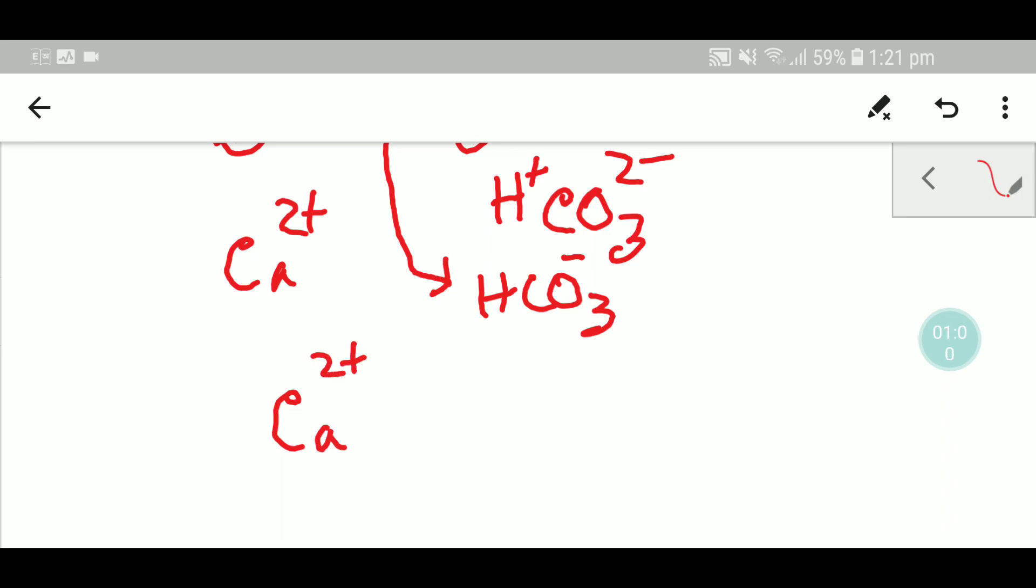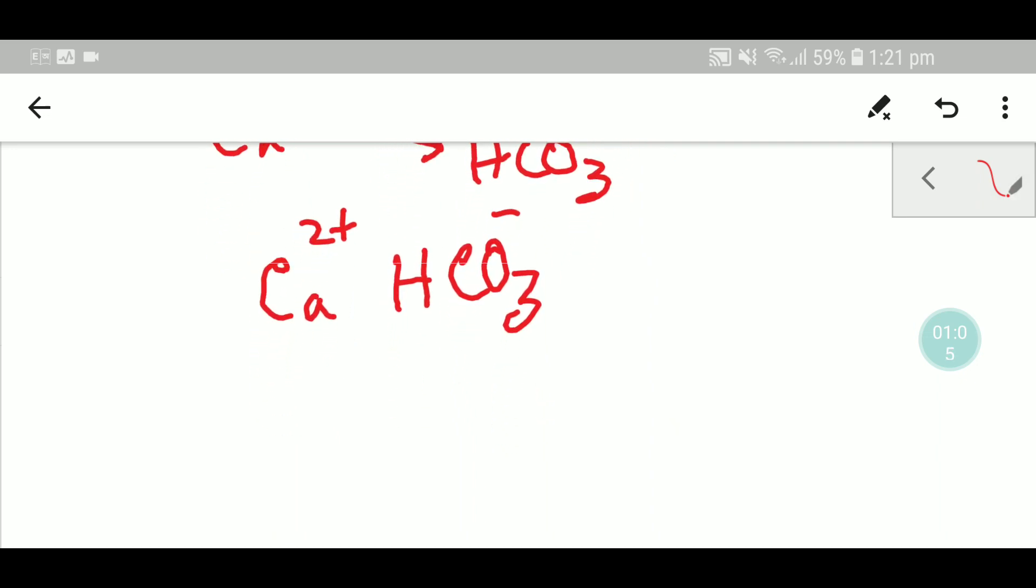For writing the chemical formula of calcium bicarbonate, calcium has two positive charge and bicarbonate has one negative charge. You have to apply the criss-cross method. The superscript of bicarbonate will be the subscript of calcium, and the superscript of calcium will be the subscript of bicarbonate.